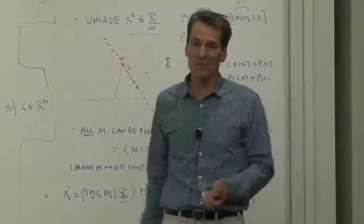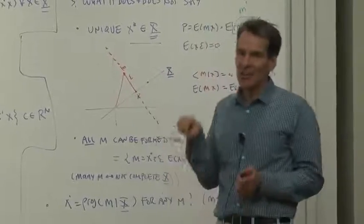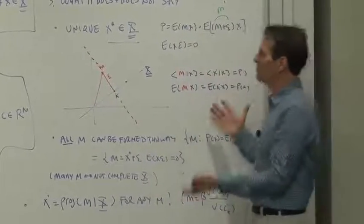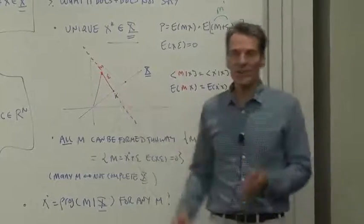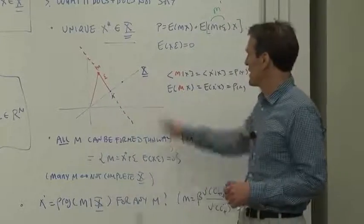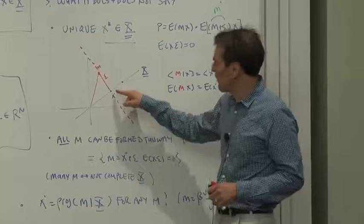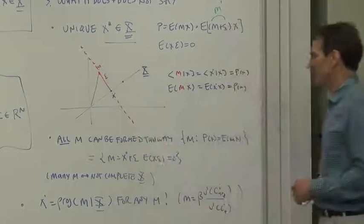Why are there so many discount factors, you say? Ah, because we have an incomplete market. If we had a complete market, the discount factor contingent claims price would be unique. But now it's not unique. There's only one in X, but there's lots of them that are not in X.